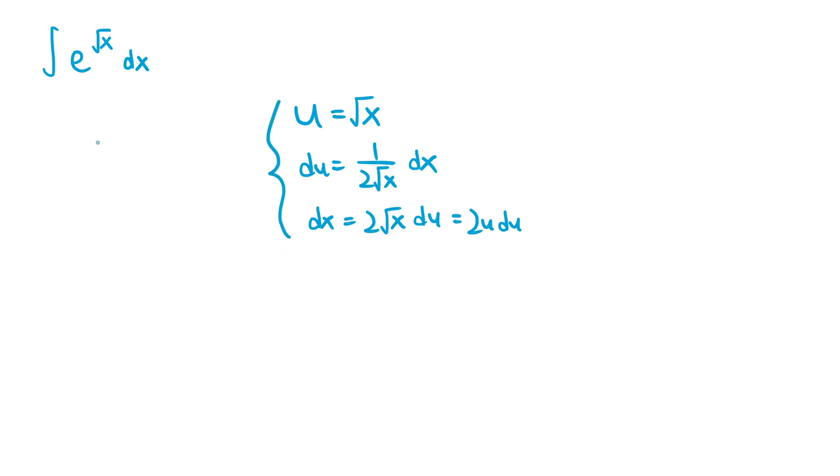Now this becomes the integral of 2u e to the u du, since dx is equal to 2u du, and e to the power of the square root of x becomes e to the u, since we set u equal to the square root of x.